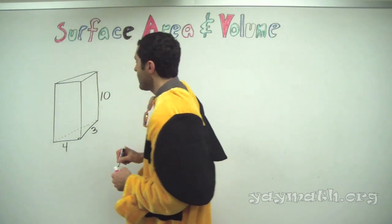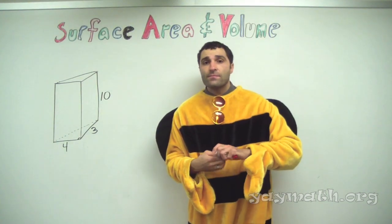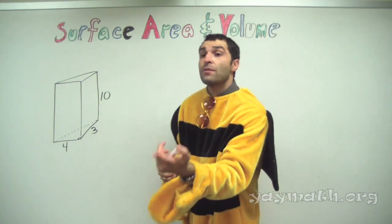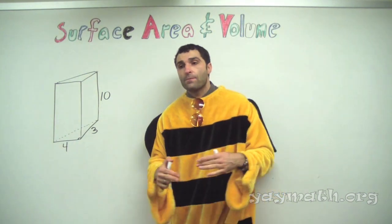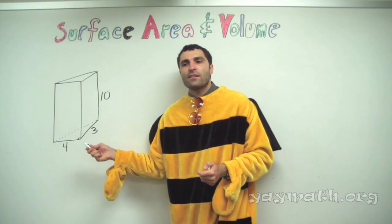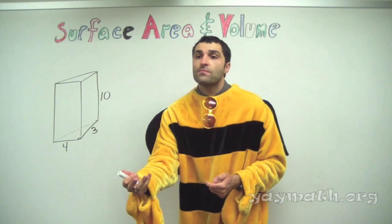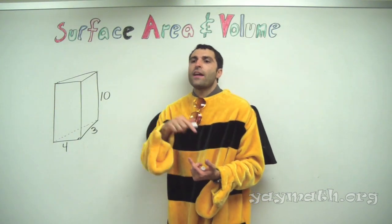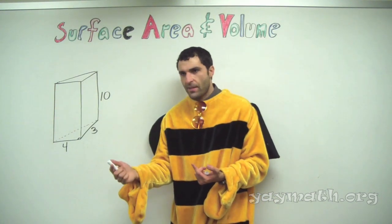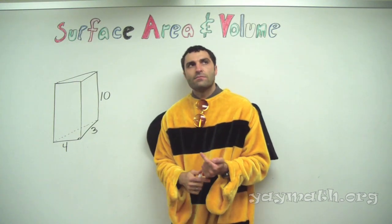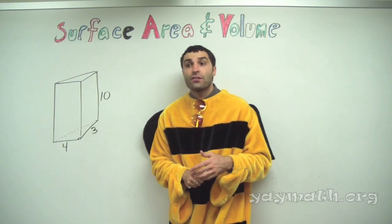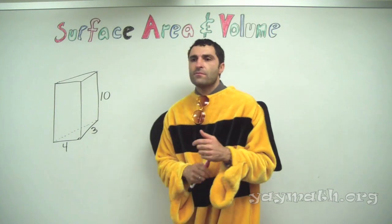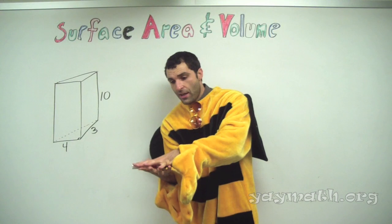Any shape that you extend out becomes a prism: square prism, rectangular prism, triangular prism, hexagonal prism. What's the formula for the volume of any prism? Area of the base times height. We have to find the area of the base first — that's why it's capital B. What type of shape is the base? It's a triangle, so it's one-half base times height.